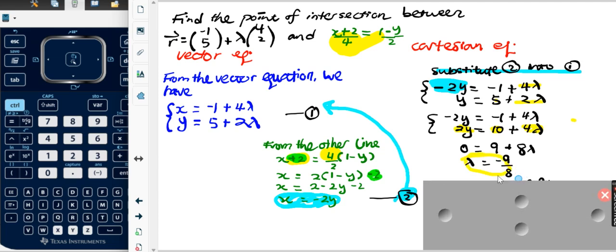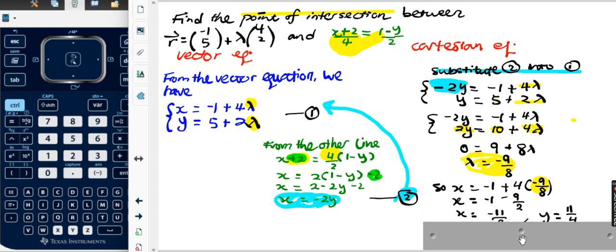So once we get negative nine over eight, we replace the lambda either in the first set or the second equation to get the coordinates. So x in this case becomes negative one plus four times lambda, negative nine over eight. Simplifying this gives negative eleven over two.